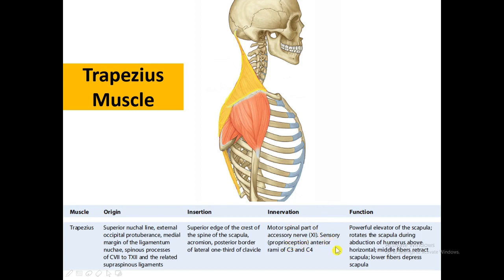The trapezius is innervated by the motor branch of the accessory nerve and sensory fibers from the anterior rami of C3 and C4. Its function: it is a powerful elevator of the scapula, rotates the scapula during abduction of the humerus above the horizontal, the middle fibers retract the scapula, and the lower fibers depress the scapula.